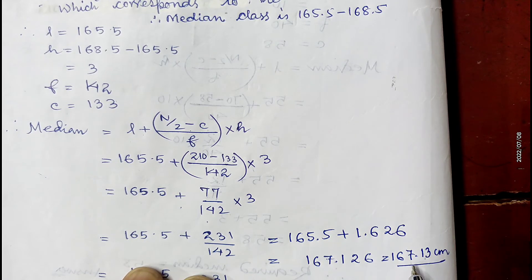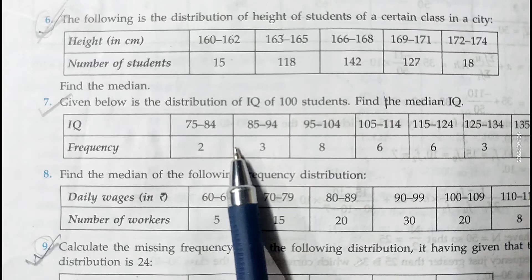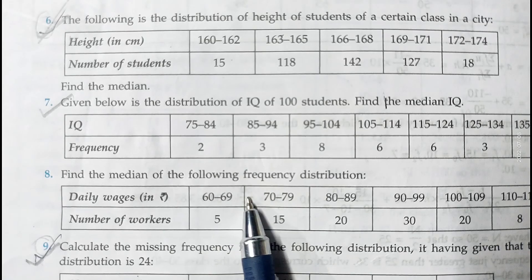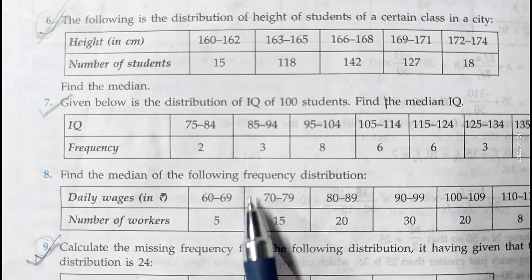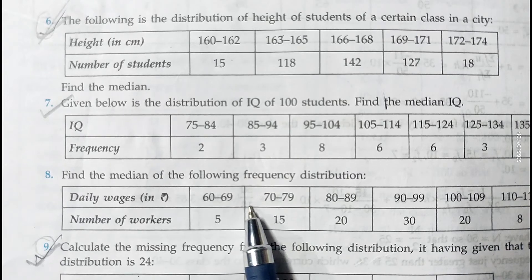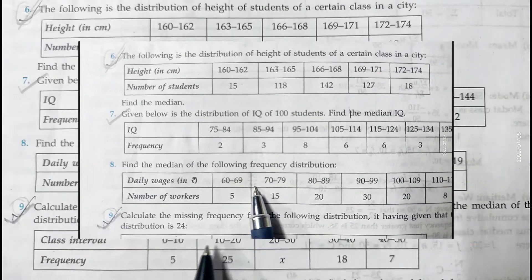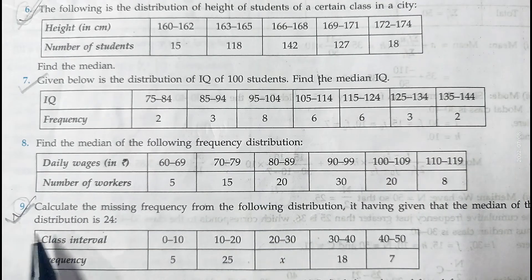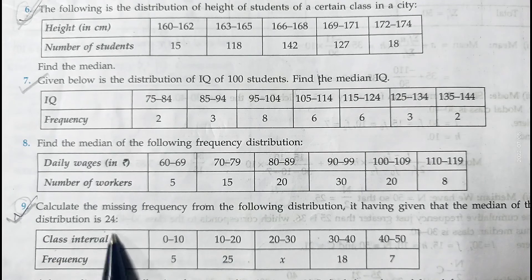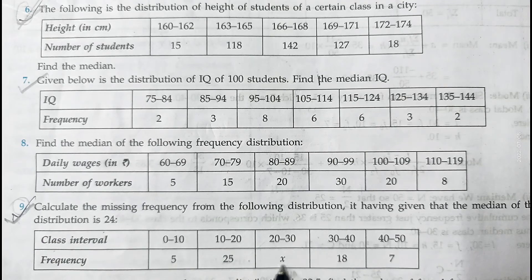Therefore the median height is 167.13 centimeters. Questions 7 and 8 you can do yourself — in those you also need to make the table continuous before calculating the median.